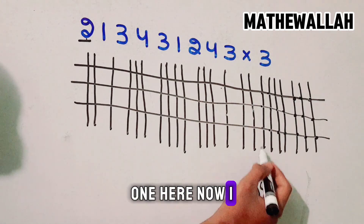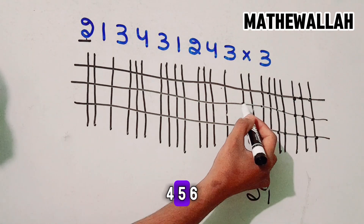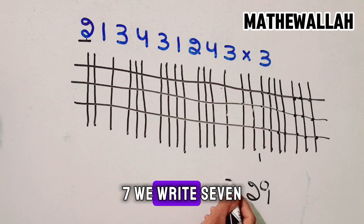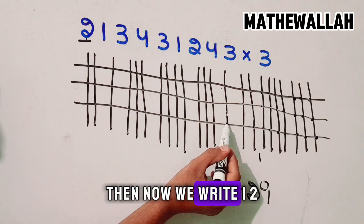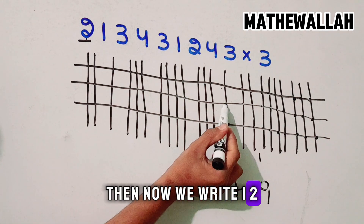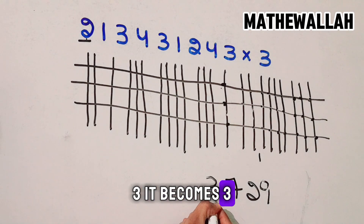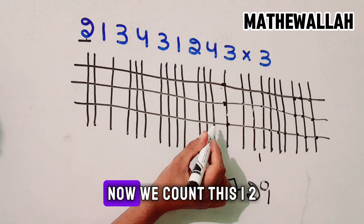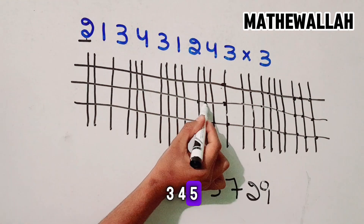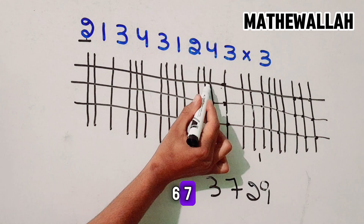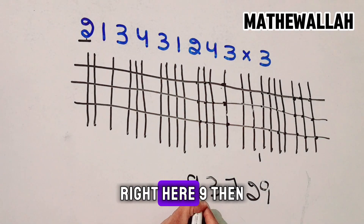Now 1, 2, 3, 4, 5, 6, 7 — we write 7. Then 1, 2, 3, 4, 5, 6, 7, 8, 9 — we write here 9.